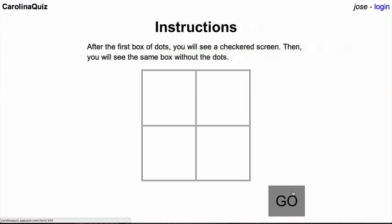After the first box of dots, you will see a checkered screen. Then you will see the same box without the dots. The instructions continue, and eventually we'll get to the actual test.